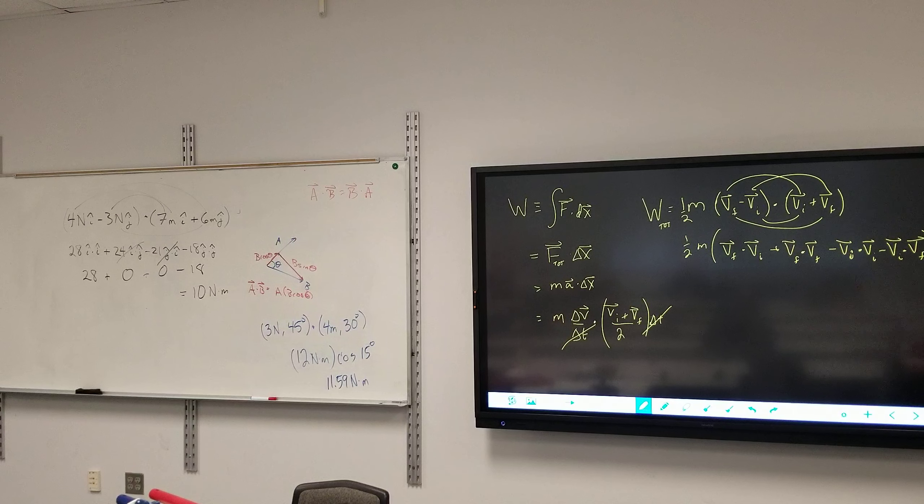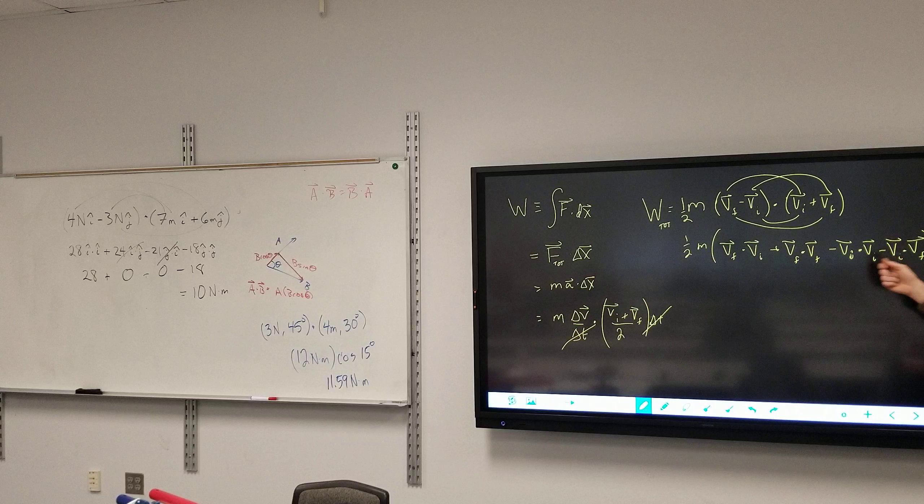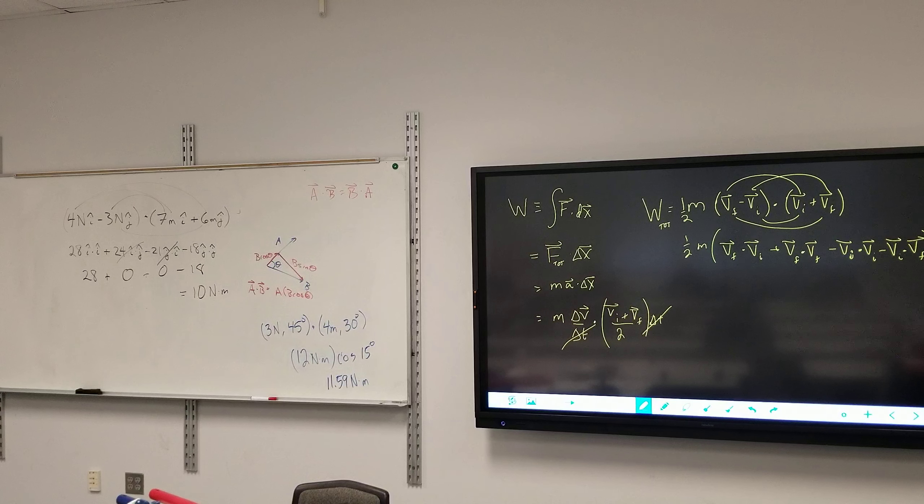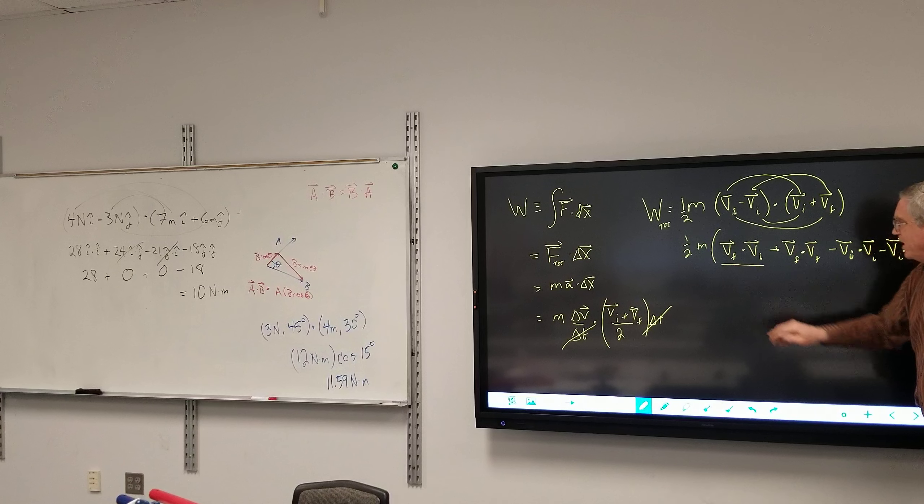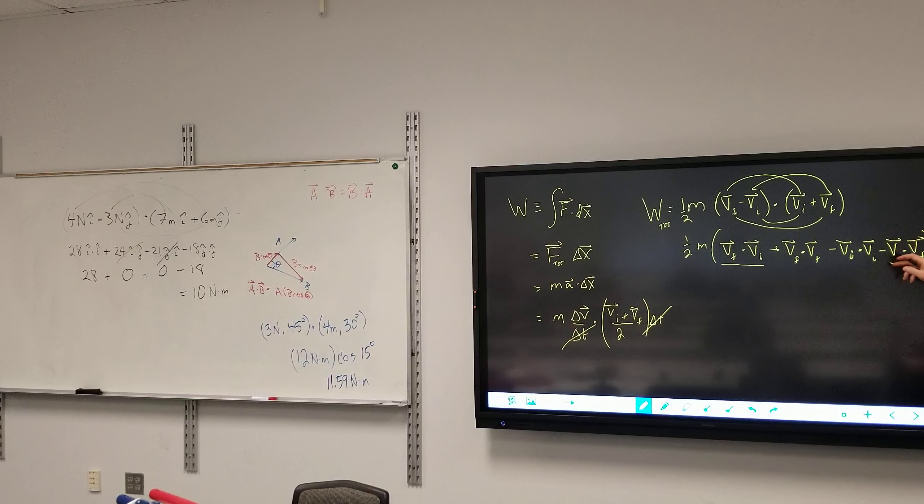I have four terms here, two of which are going to cancel each other out. Which two will cancel? I got vf dot vi there. I have vi dot vf minus vi dot vf. Commutative property holds, so the order in which I multiply does not matter. So that will cancel out with that.